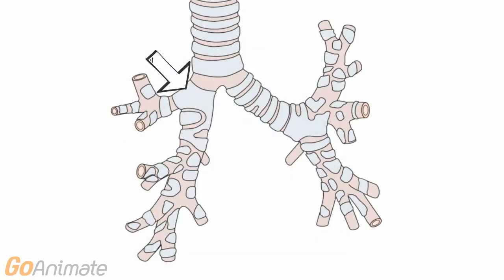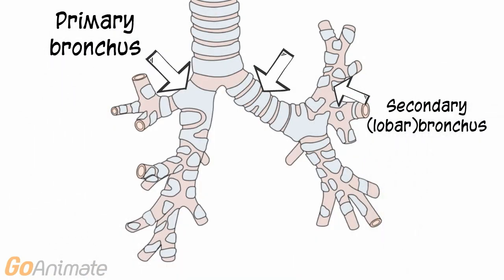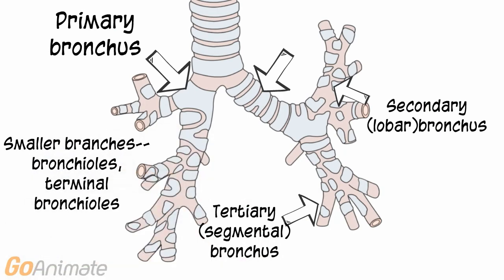The primary bronchi split into secondary bronchi, which divide into tertiary bronchi, which again divide into smaller passages called bronchioles and terminal bronchioles.